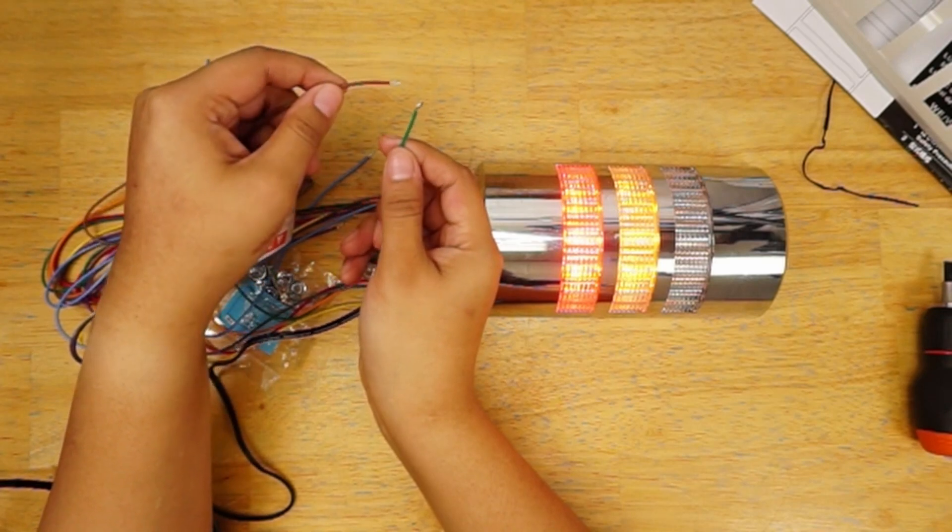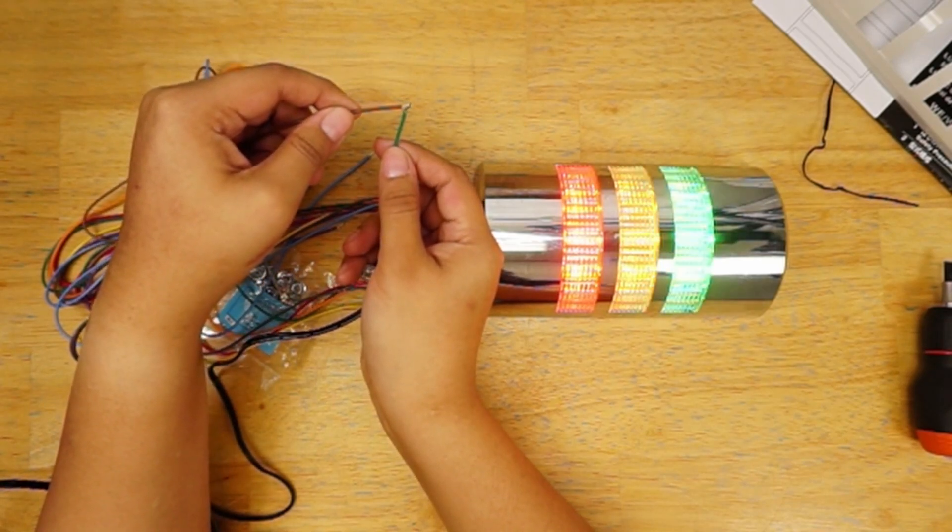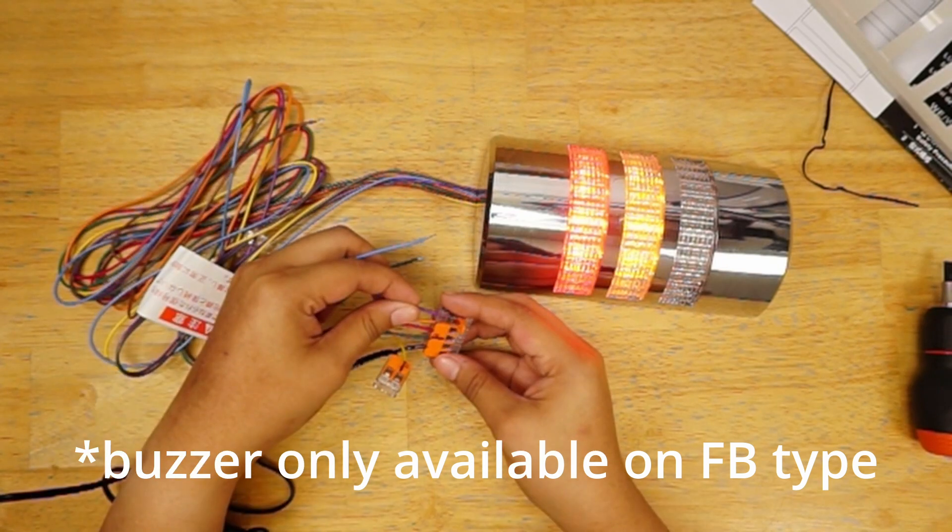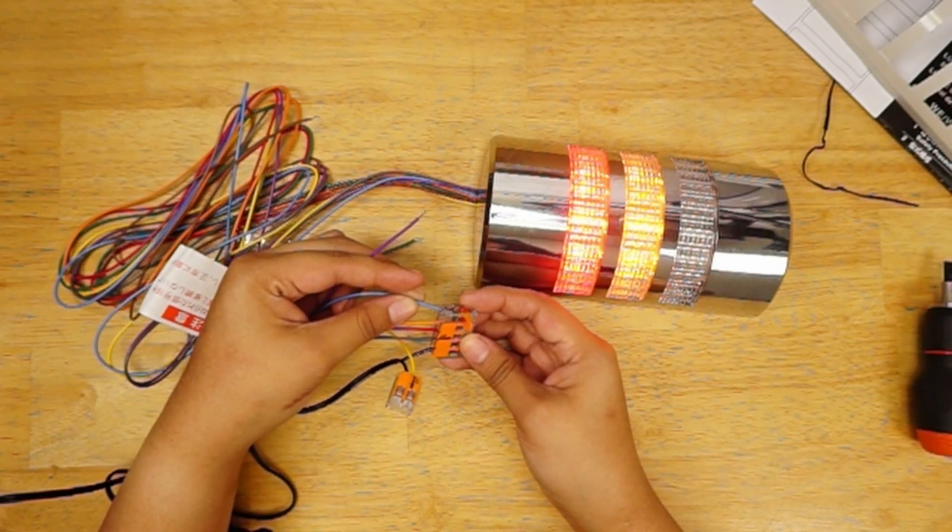For flashing, it is a dry contact between the brown wire and the color LED wires. There are two buzzer wires. Purple is a rapid beep. Sky blue is a slower beep.